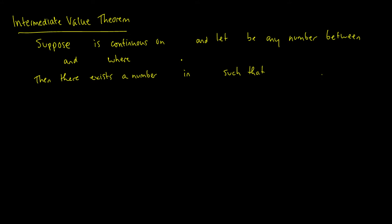Okay, so we're going to say that suppose a function f(x) is continuous on a closed interval [a, b], and we're going to let some number N be any number between f(a) and f(b), where f(a) is not equal to f(b).